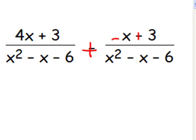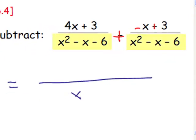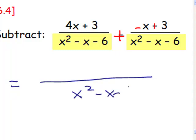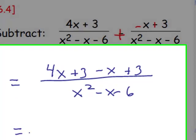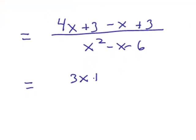So now it's just adding fractions with the same denominator, x squared minus x minus 6. The numerators can combine directly, 4x plus 3, and we have a negative x, and another plus 3. These combine to become 3x plus 6 over the x squared minus x minus 6.